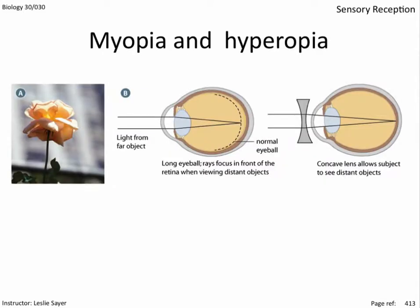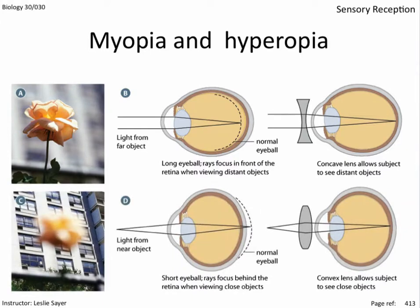Myopia and hyperopia. People who are nearsighted are myopic. The longer eyeball focuses images in front of the retina, corrected by concave lenses, which make your eyes look small. Laser eye surgery involves reducing the length of the eye by shaving away some of the cornea. Farsighted people cannot focus near objects and require convex lenses to correct an image trying to focus behind the retina. The lens makes your eyes look magnified.